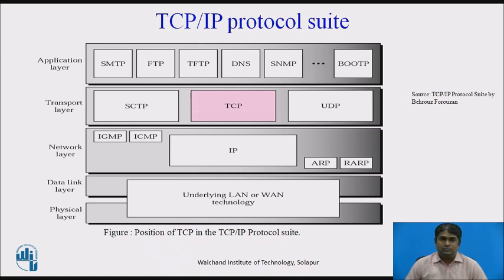Previously, there were only two protocols at the transport layer — UDP and TCP. Now, the Stream Control Transport Protocol (SCTP) has been newly added. At the application layer, there are different protocols like Simple Mail Transfer Protocol, File Transfer Protocol, Trivial File Transfer Protocol, Domain Name Servers, Simple Network Management Protocol, and Bootstrap Protocol. You can see TCP working as an intermediary between the application layer and the network layer.